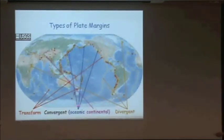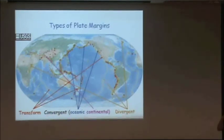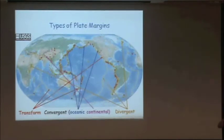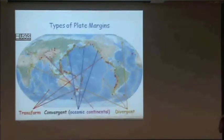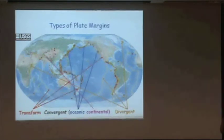We have a second type called convergent boundaries, where the plates are coming together. If it's an oceanic boundary, one of the plates goes underneath the other. If it's a continental boundary, we're still working on exactly what happens — probably one plate is going underneath the other, but it's lifting it and the mountains are much higher.